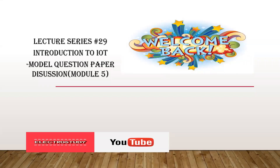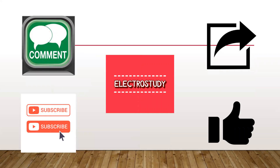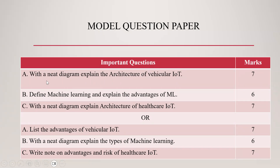Hello everyone, this is lecture series 29 — introduction to IoT, dealing with model question paper discussion for module 5. In previous videos we have seen and discussed some important questions from the model question paper for modules 1, 2, 3, and 4. This is the fifth module. The questions include: explain the architecture of vehicular IoT (7 marks), define machine learning and explain its advantages (6 marks), explain the architecture of healthcare IoT (7 marks), and we'll be seeing the key answers and mark split-ups.